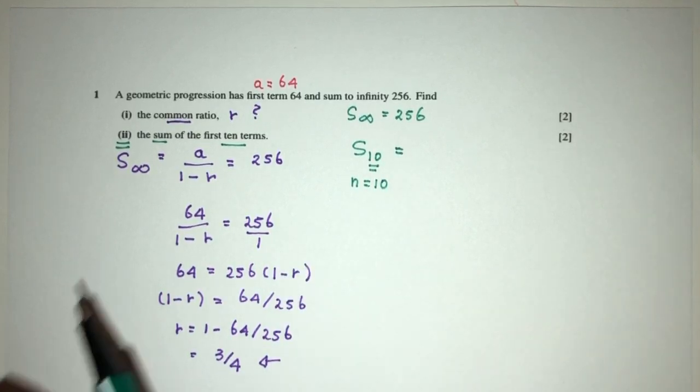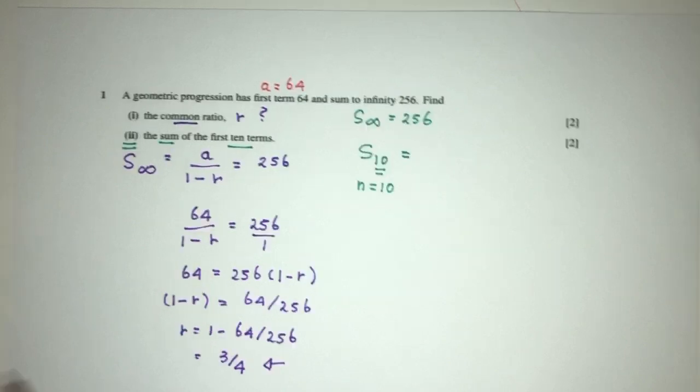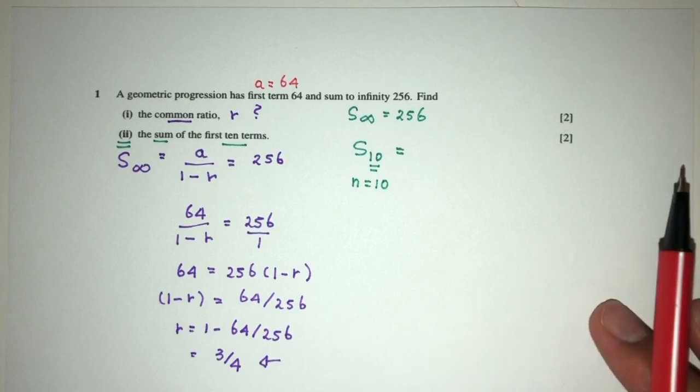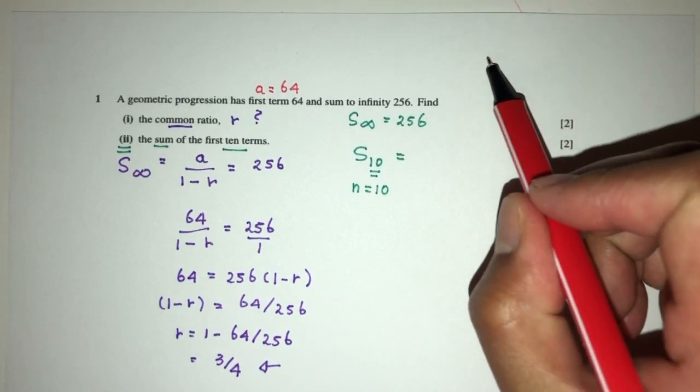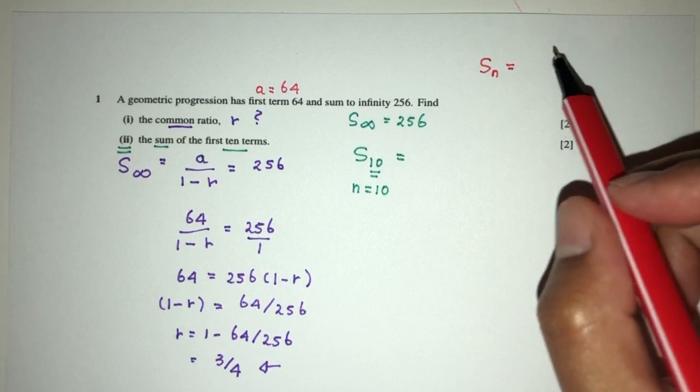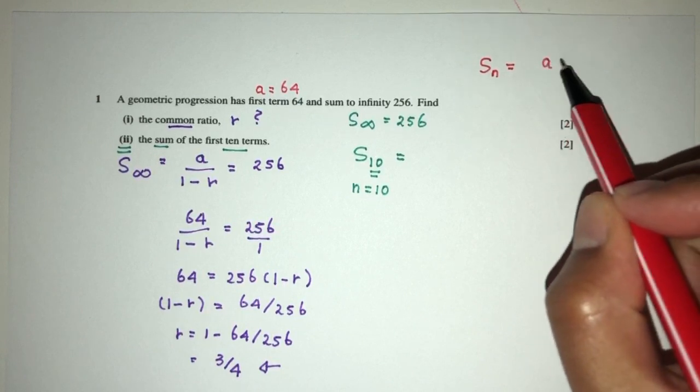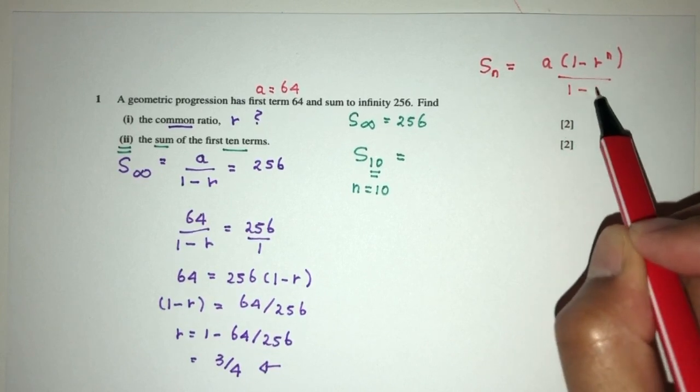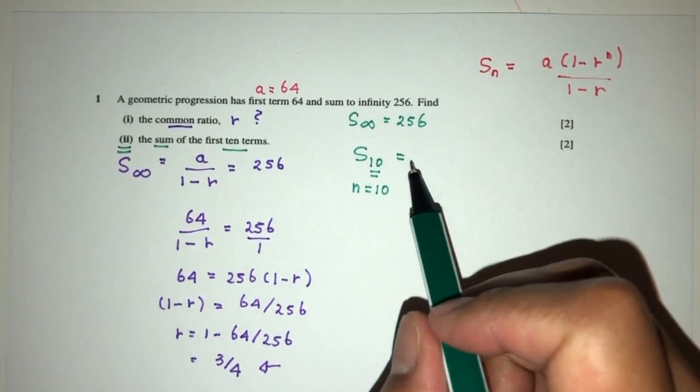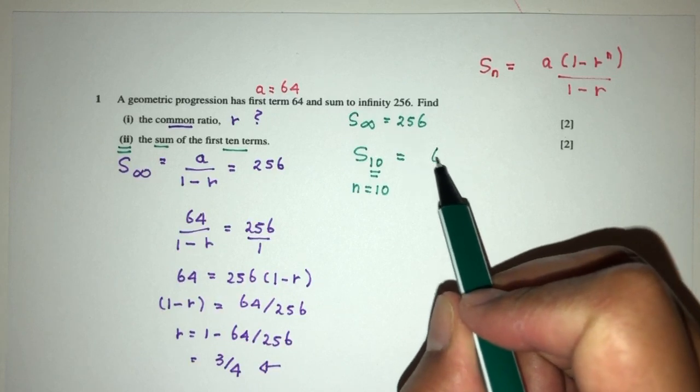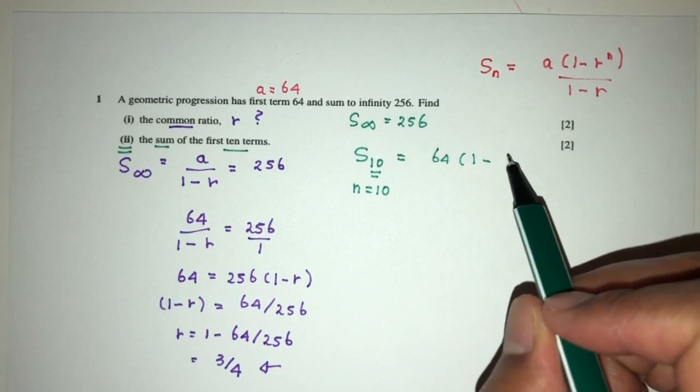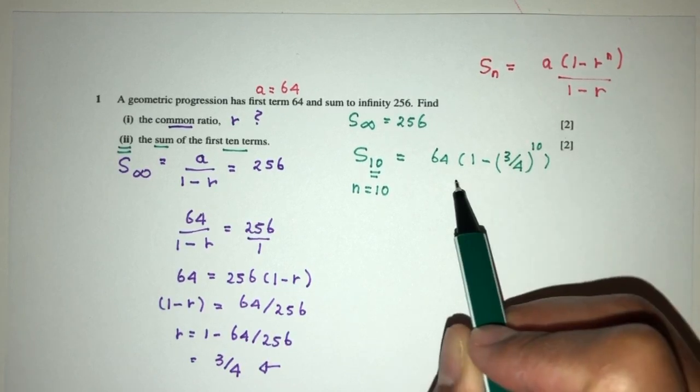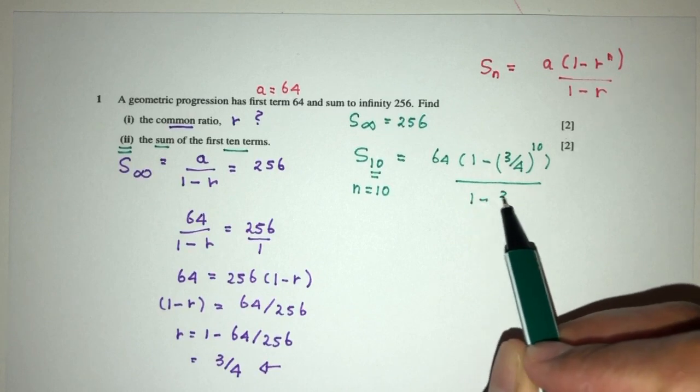So again, this is something we are given on your list of formula that we kind of have to know. We don't have to memorize, but let's write this down. Sum of the first 10 term is equal to what? It is equal to A, 1 minus R power n over 1 minus R. So let's replace and see what happens. So here you have A is given to you by 64, 1 minus R is equal to 3 over 4 power 10 over the value of 1 minus 3 over 4.